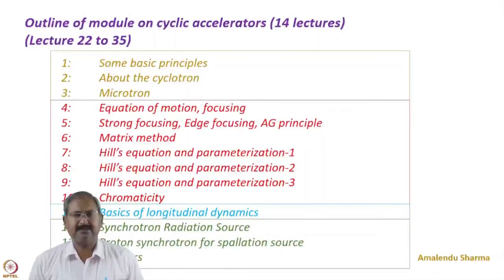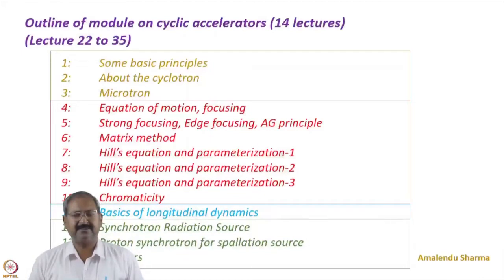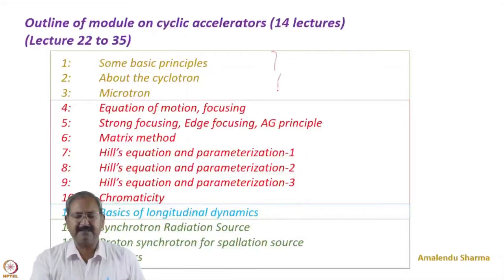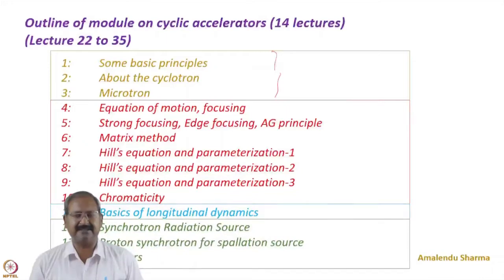In this module of the course we will study cyclic accelerators. So far you have studied DC accelerators and linear accelerators; now we will talk about cyclic accelerators. This module covers 14 lectures, from lecture 22 to 35, and can be broadly broken into four parts. The first part covers basic principles on which cyclic accelerators are based, and two types — cyclotron and microtron — will be discussed quantitatively, including derivation of the equation of motion when a charged particle passes through the electromagnetic field.